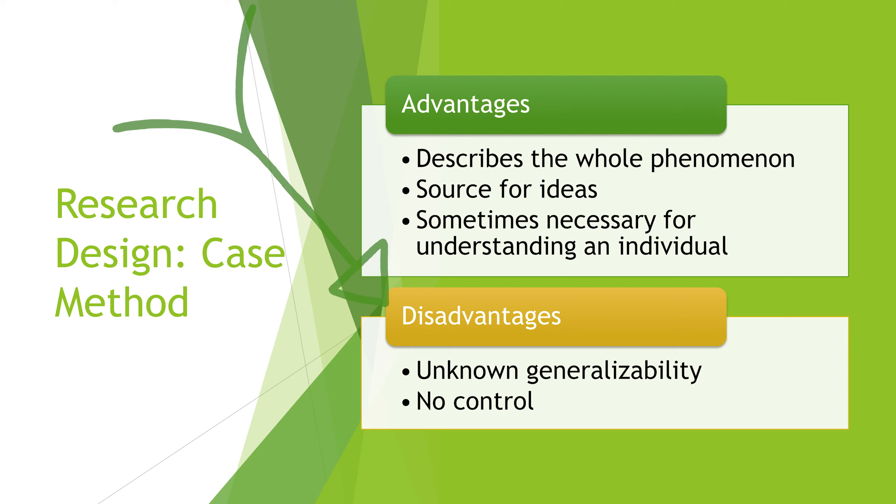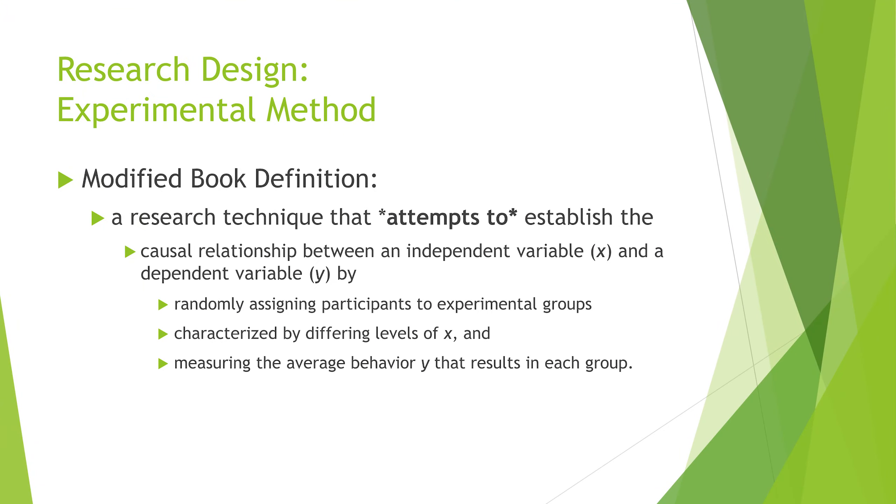There are some big downsides to the case method. And that's why usually it's a starting point, not an end point. It's hard to know if it generalizes—if it's just a quirk of one person, or if it's actually a broader phenomenon. And you also don't have a control group. Without a control group, it's impossible to determine whether facts or variables are crucial or just coincidence to understanding a person. But it's a good place to start.